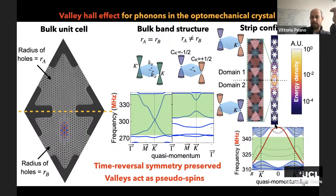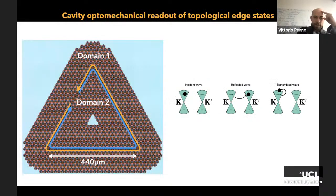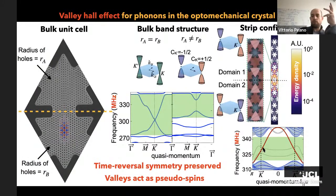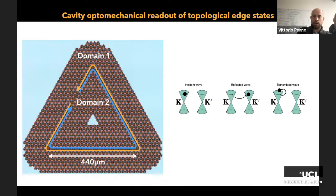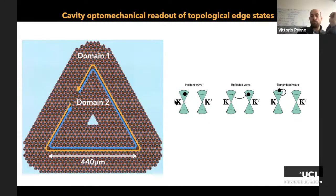To engineer fairly robust states, we create a domain wall where the two domains have opposite valley Chern numbers. The bulk-boundary correspondence then guarantees an edge state, which also follows from a continuum description in terms of the Dirac equation. Valley plays the role of spin: in one valley the edge state goes to the right, in the other valley to the left. This is robust because at a sharp corner, propagation direction can change without significantly changing momentum — a special property of Dirac cones.